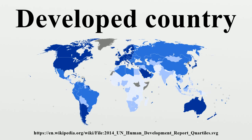The term industrialized country may be somewhat ambiguous, as industrialization is an ongoing process that is hard to define. The first industrialized country was the United Kingdom, followed by Belgium. Later it spread further to Germany, United States, France and other Western European countries. According to some economists such as Jeffrey Sachs, however, the current divide between the developed and developing world is largely a phenomenon of the 20th century.